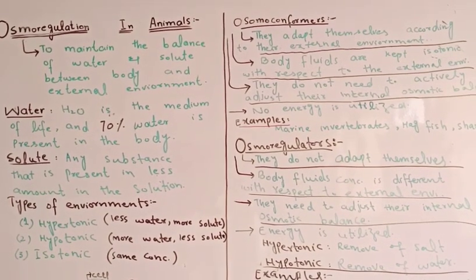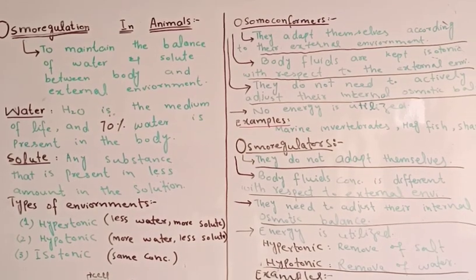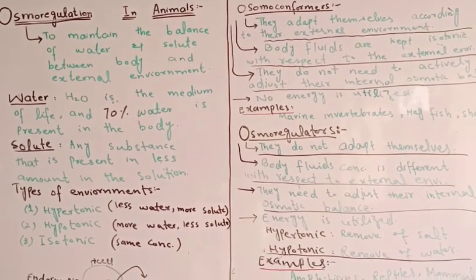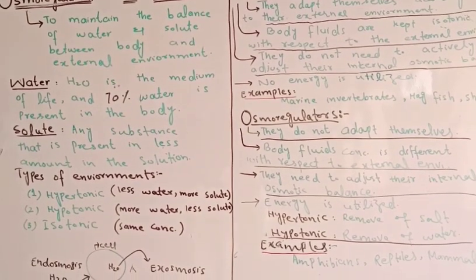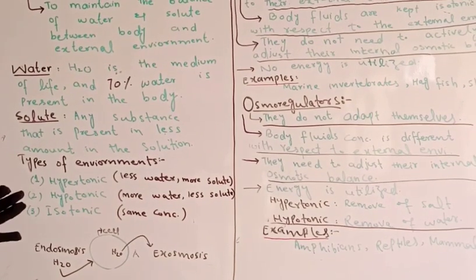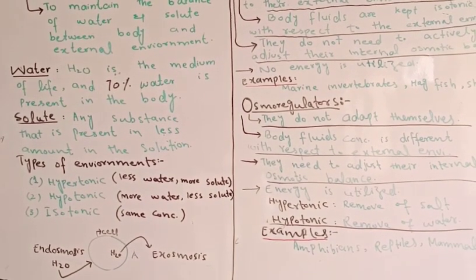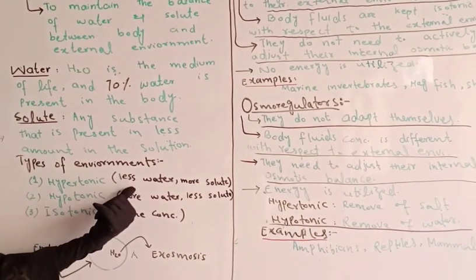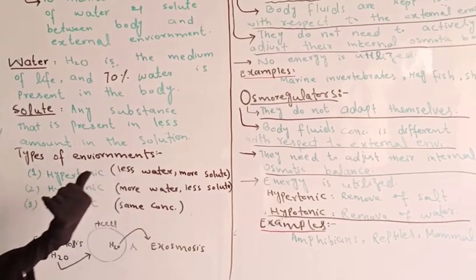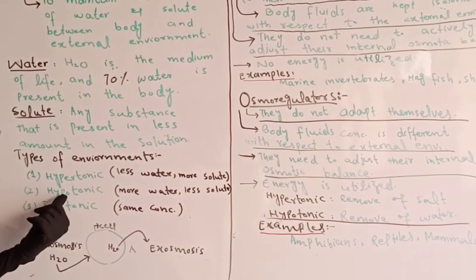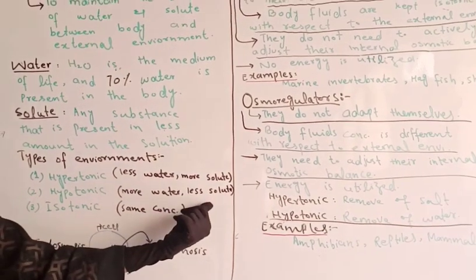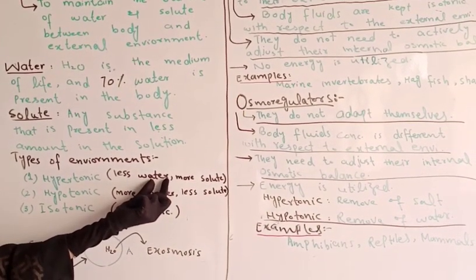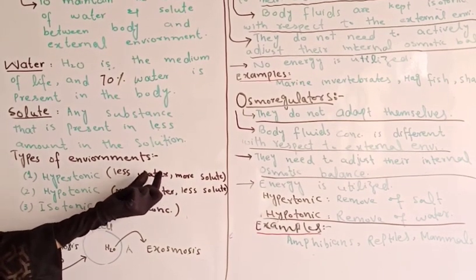We have studied three types of solutions: hypertonic, hypotonic, and isotonic. In hypertonic, it is an environment which has very high concentration — for example, the concentration of salt will be very high as compared to water. In hypotonic, the solute concentration is less than water, making it a dilute solution.